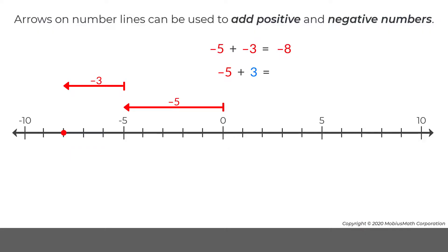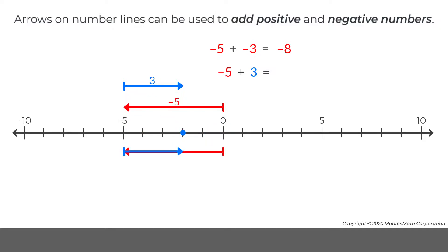To represent negative 5 plus 3, the arrow for negative 3 switches direction to represent 3. Once again, when a positive number and a negative number are added, the overlapping parts of the arrows combine to make 0. The remaining part of the arrow represents the sum: negative 5 plus 3 equals negative 2.